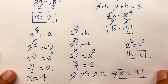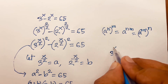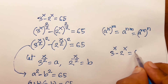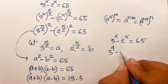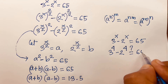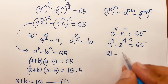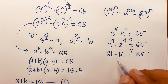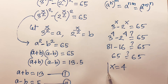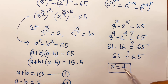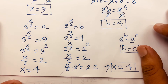Our final answer is x equals 4. Let's verify: the original equation is 3^x minus 2^x equals 65. Substituting x = 4: 3^4 minus 2^4 equals 81 minus 16, which equals 65. So x equals 4 is correct. Thank you all — if you enjoyed this video, please subscribe, like, and comment. Goodbye!